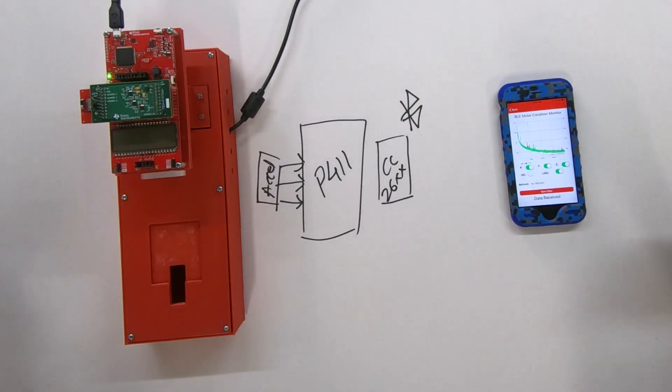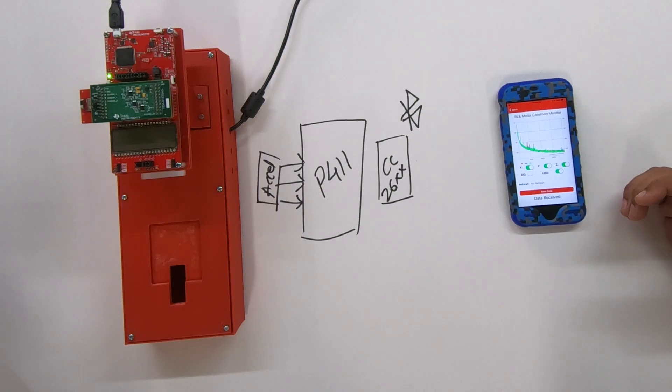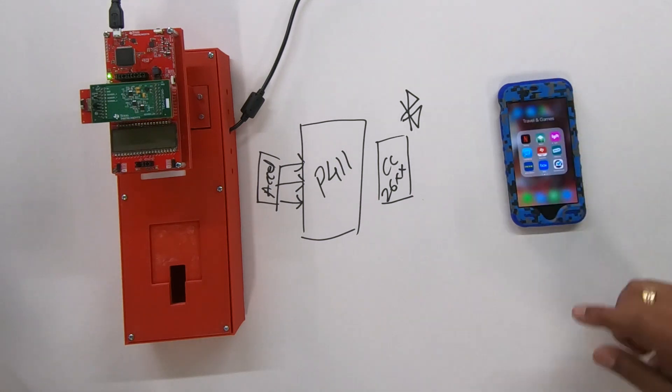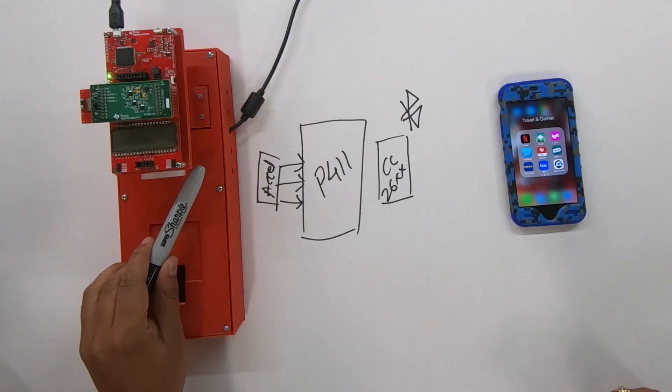So what I can see is the X, Y, and Z. I can switch off the X, Y, and see a particular axis of information. I can move between log scale or linear scale, and I can also save the data to my cloud service. As you can see, we have a very clean waveform, not too much noise. So let's try to introduce noise by actually using this pen and touching it to the motor.